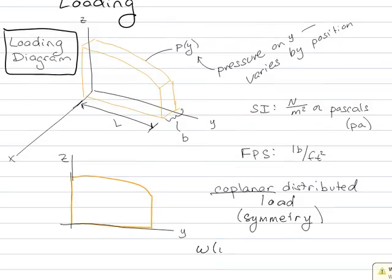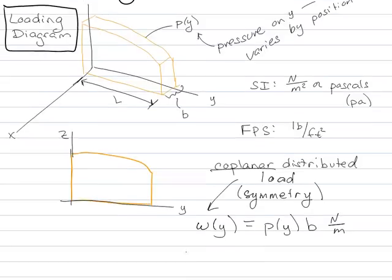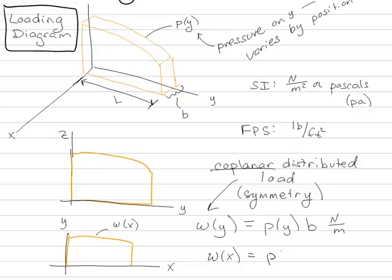So in this case, what you'll usually see is some function w, which is the coplanar distributed load, equal to the pressure base times the thickness. And again, since this is a Newton meter squared, if I multiply it by a thickness, now my units are Newton per meter. It doesn't have to be dependent on y. If I drew it like this, which is pretty much how you're always going to see it, I could say that this was w(x), where the coplanar distributed load is given by some pressure times some distance. And it would be in newtons per meter.